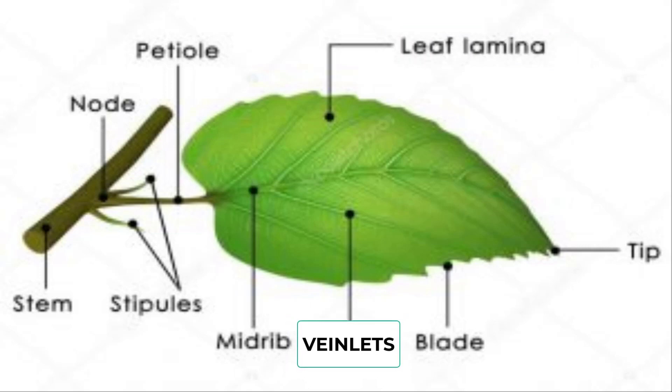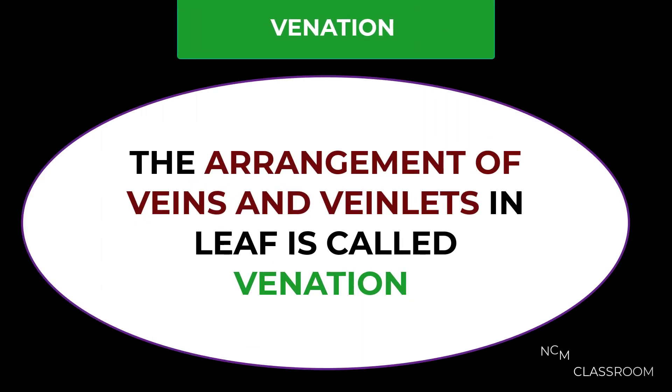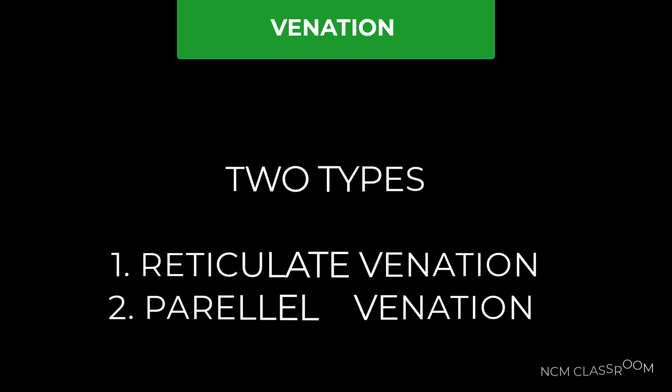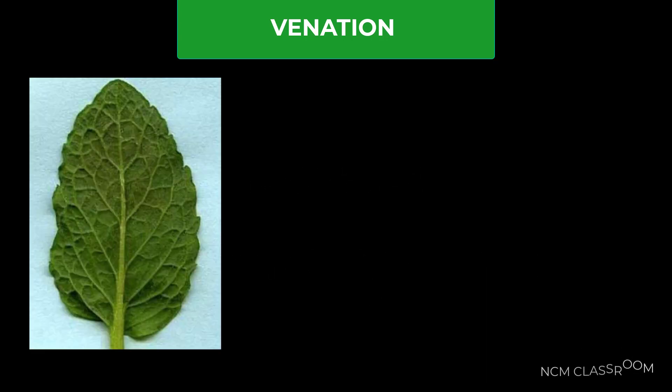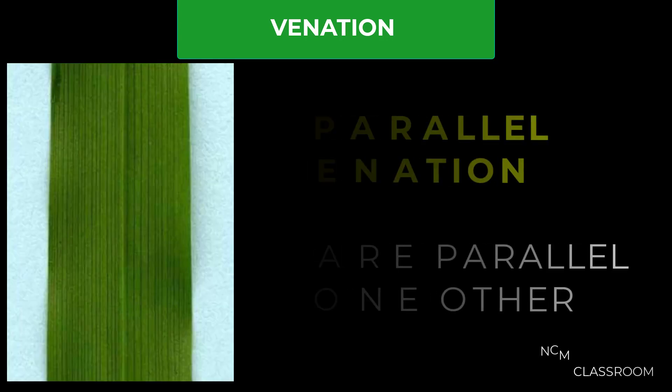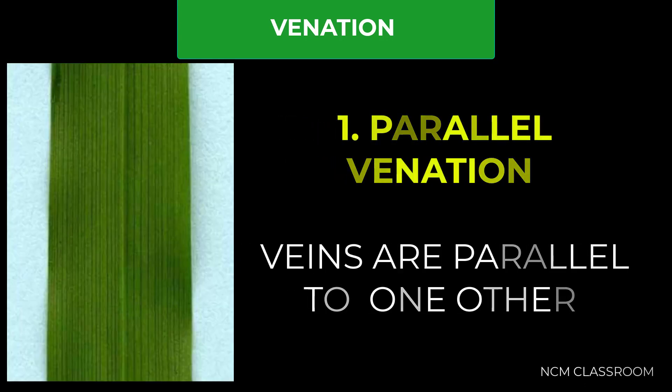The structures inside the leaf are called veins. What is venation? The arrangement of veins and veinlets in the leaf is called venation. The spread or arrangement of veins are two types: one is reticulate venation, another one is parallel venation. Reticulate venation: lamina with midvein and veinlets are arranged in net or web-like structure on both sides of midrib. Parallel venation: veins are parallel to one another.